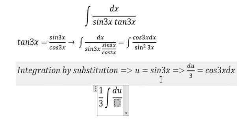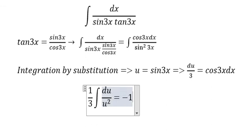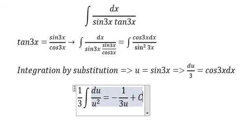u equals sin 3x. We have u squared in the denominator. After integrating, we get minus 1 over 3u plus c.